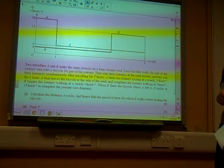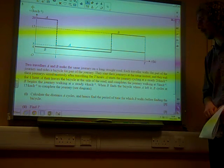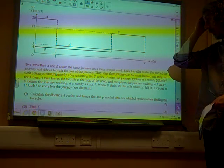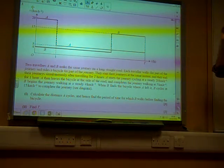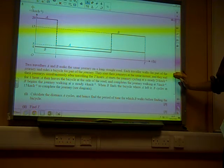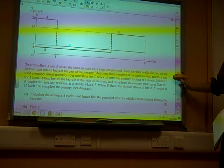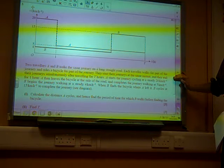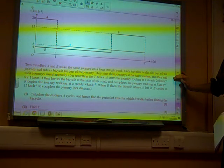So question three, we've got this lovely velocity time graph. Two travellers, A and B, make the same journey along a straight road. Each traveller walks for part of the journey and rides a bicycle for part of the journey. They start the journeys at the same instant and end their journey simultaneously, after travelling for T hours.